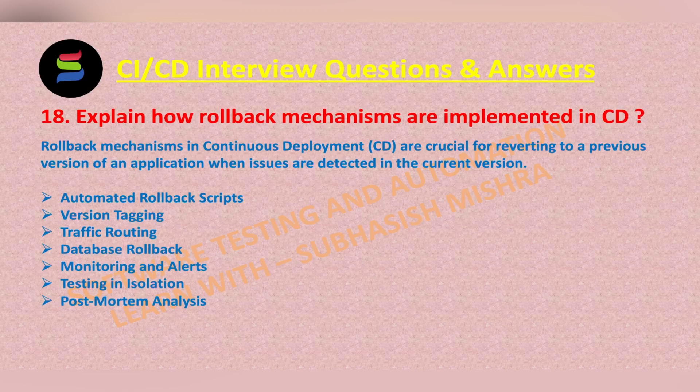Monitoring and alerts: continuous monitoring in the production environment is essential for quickly detecting issues. When problems are detected, alerts are triggered and the team is notified so they can initiate the rollback process.